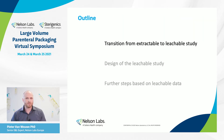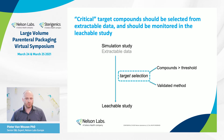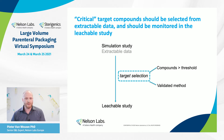The first part is the transition from the extractable to the leachable study. There is always a certain set of extractable data, and extractables present at potentially concerning concentrations are selected and monitored in a subsequent leachable study — this is what we call the target selection procedure. For a large-volume parenteral application, we typically start from the simulation study data to do this kind of target selection.